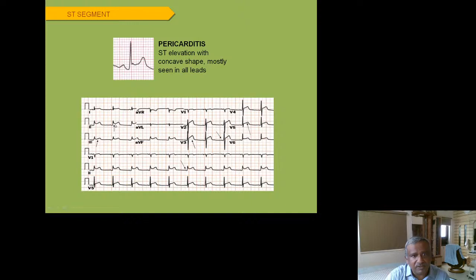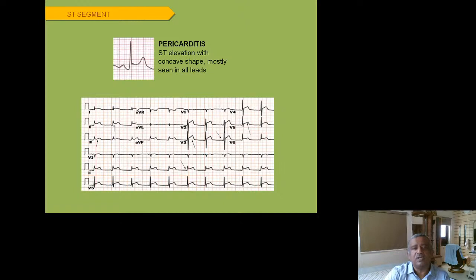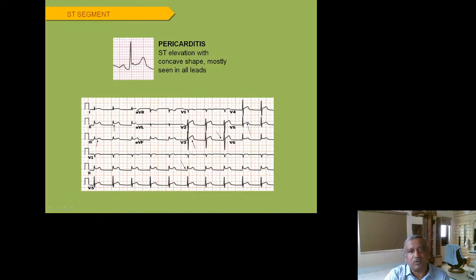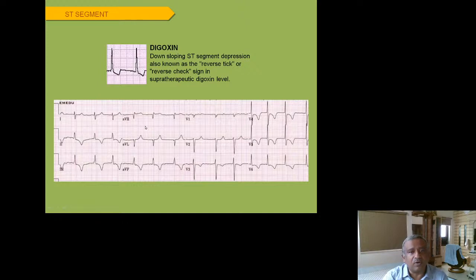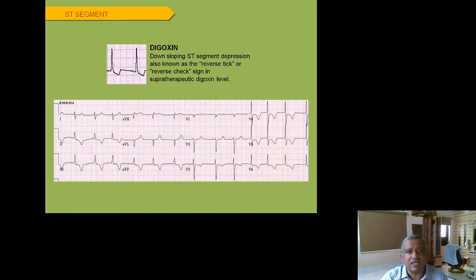Pericarditis produces ST elevation in all leads with a characteristic concave (saddle-shaped) appearance — like a stone dipping into a cloth string. All leads are affected, the ST elevation is not as marked as in MI, and there is always concavity of parts. This concave-shaped ST elevation in all leads is the hallmark of pericarditis. Digoxin toxicity produces a characteristic reverse-tick or reverse-check-sign pattern of ST depression, mainly seen at supratherapeutic digoxin levels.